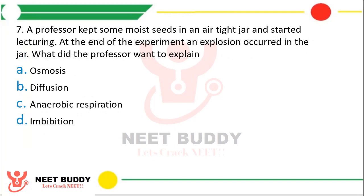Question 7: A professor kept some moist seeds in an airtight jar and started his lecture. At the end of the experiment, an explosion occurred in the jar. What did the professor want to explain? Option A: osmosis, option B: diffusion, option C: anaerobic respiration, option D: imbibition. The correct answer is option D, imbibition.